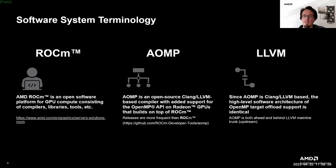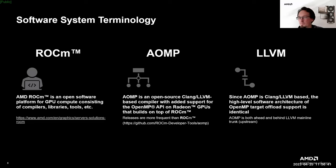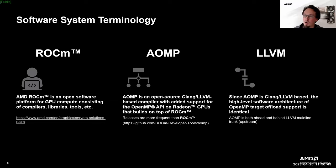In summary, ROCm is the AMD open source compute platform. AOMP is an open source OpenMP compiler that can be looked at as a preview version of what may come to ROCm for OpenMP support. And then there's LLVM mainline, which is the open source community-developed compiler to which AMD is actively contributing.